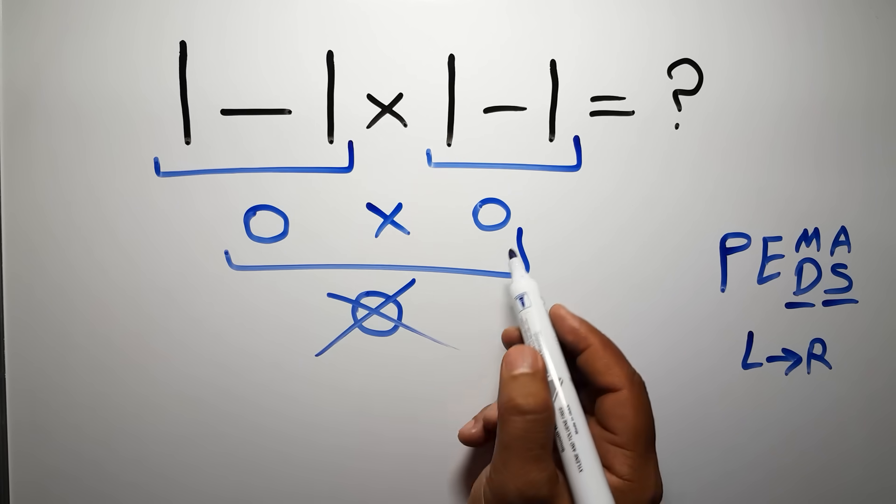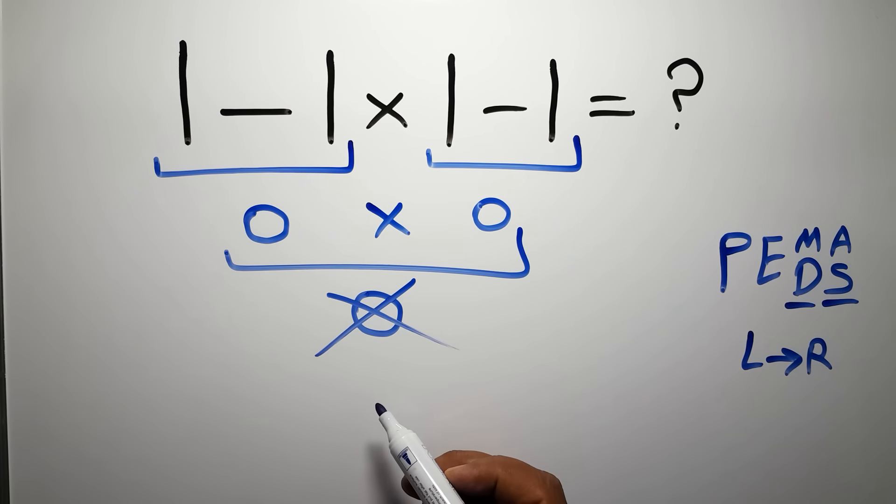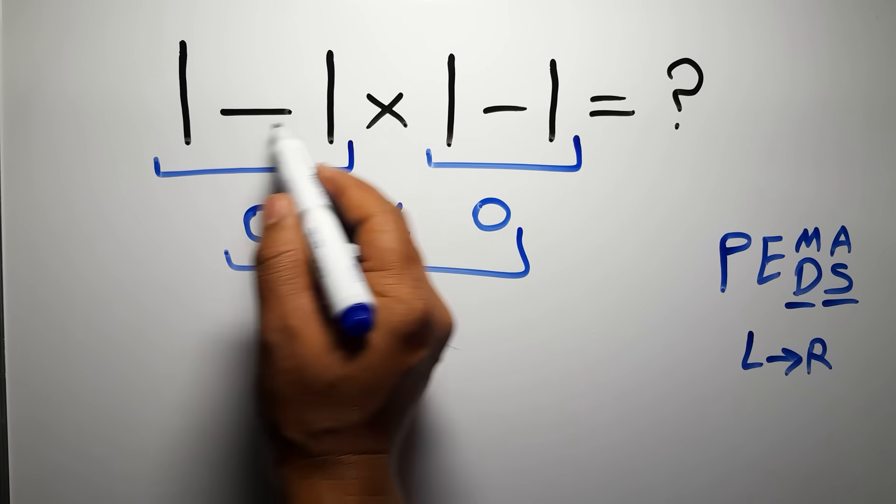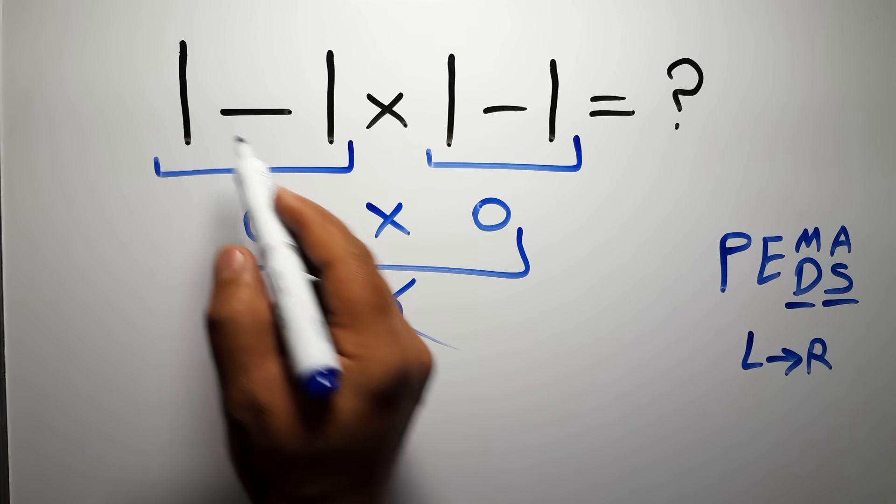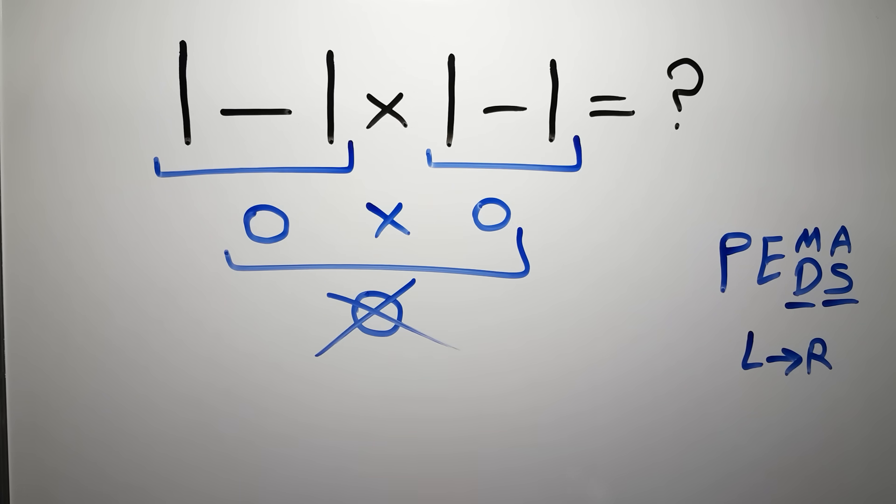In this expression, we have 2 subtractions and 1 multiplication, so first we have to do this multiplication, then this subtraction, and finally this subtraction. If we do this subtraction before this multiplication or this subtraction, it is wrong.